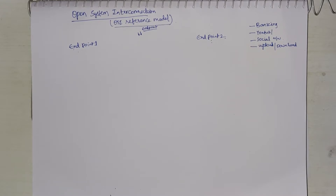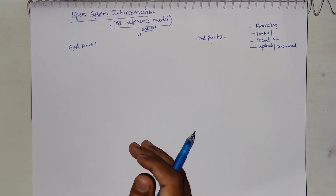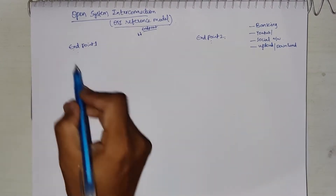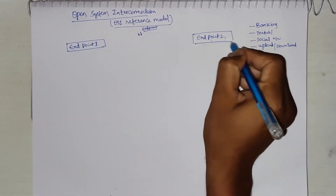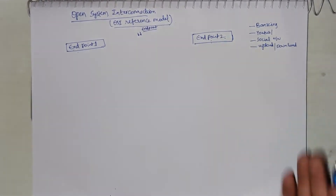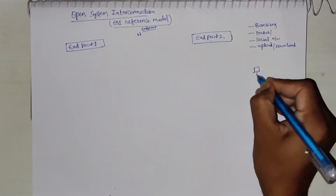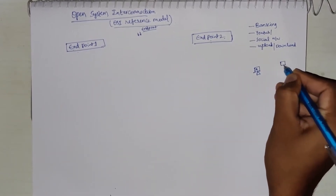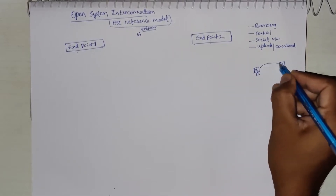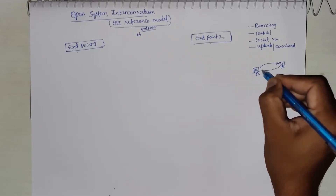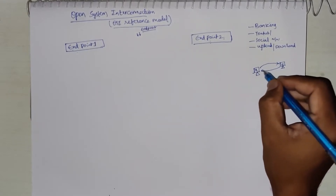Now let's see how the OSI reference model addresses these issues and what its architecture looks like. In OSI reference model architecture, there are obviously two endpoints involved. One is always called the source and the other is always called the destination, because that's where communication should happen. For example, person X is trying to send data to Y or receive information from Y. A complete communication is when X sends data to Y and a response is received back at X.